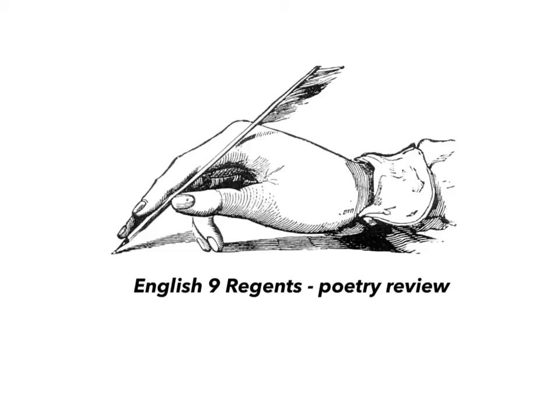Hello and welcome to Mr. Valentin's YouTube video for English Nine Regions. We're doing a poetry review today. We're going to start with a review of literary terms important for our poetry unit, then do some examples of those terms, move into identifying rhyme scheme, go over how to identify meter, and close with the eight-step method of poetry. So let's begin.